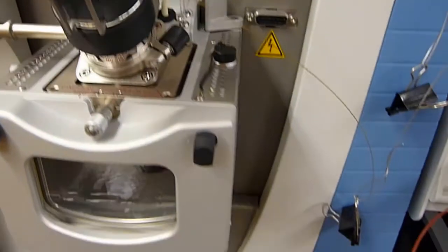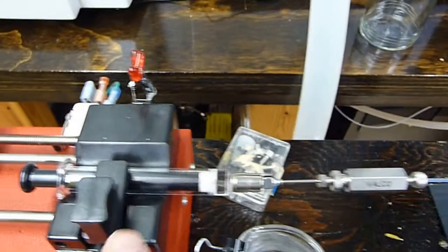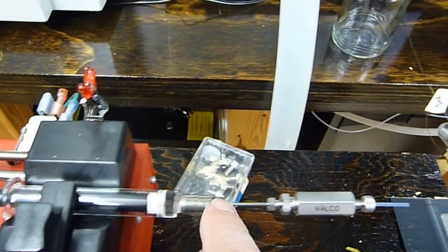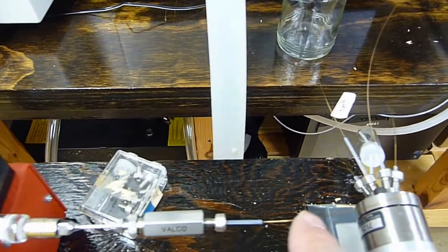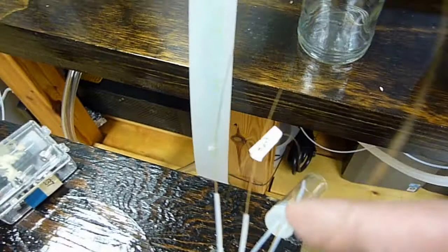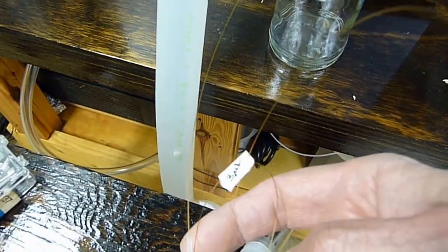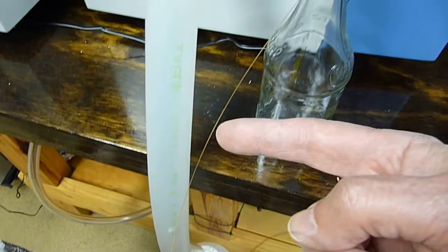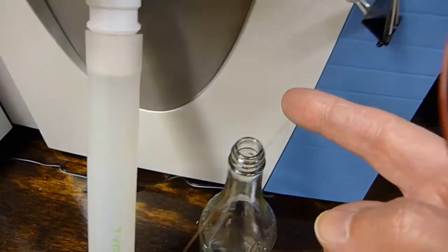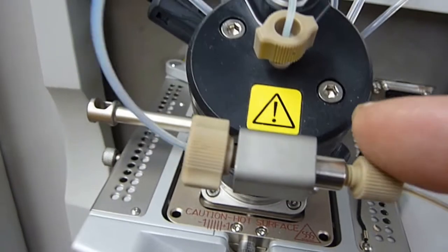And so if we go back over the system, so we have our chloroform going through the filter, making its way through six port injection valve. And then over here is the flow out. That can be the injection. And makes its way to the electrospray source.